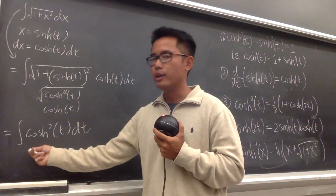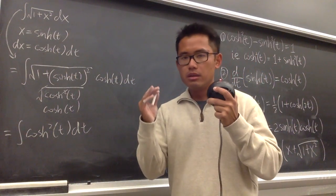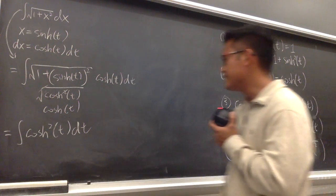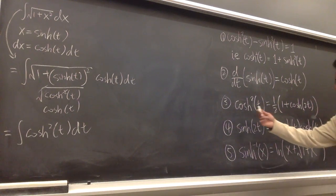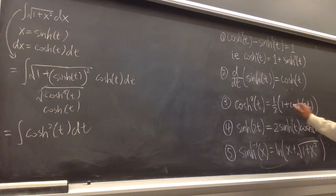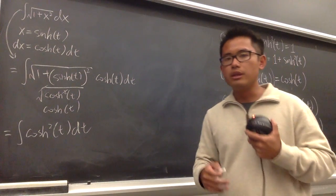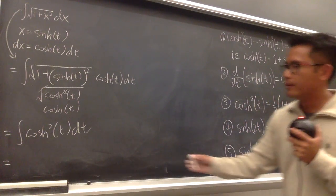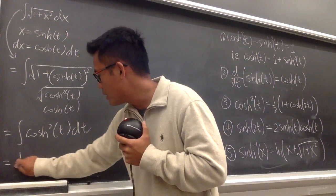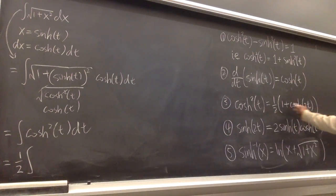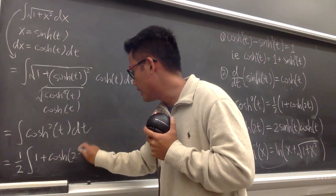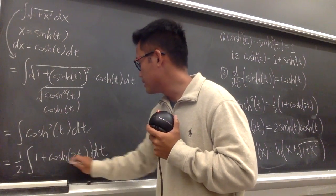Now the question is how to integrate cosh²(t). It's very similar to integrating sin²(t) or cos²(t) — we use a power-reducing identity. The identity is cosh²(t) equals one-half times the quantity 1 plus cosh(2t). So we pull the 1/2 outside the integral and integrate 1 plus cosh(2t) dt.